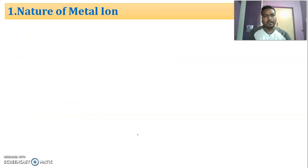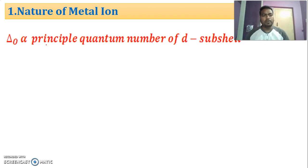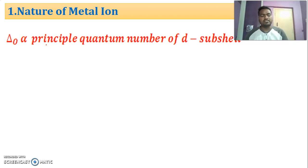Nature of metal ion. When we come to nature, the first thing I am going to consider is principal quantum number. These are numbers that explain the position of electrons in an atom. The location of an electron in an atom can be explained by using a set of numbers called quantum numbers.